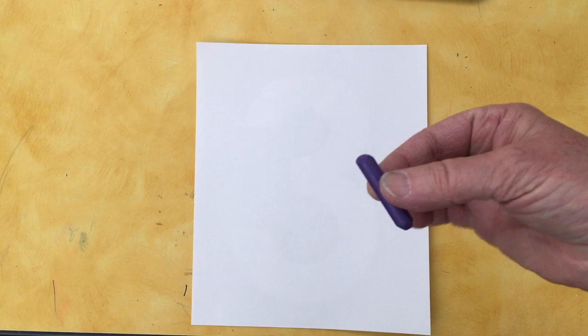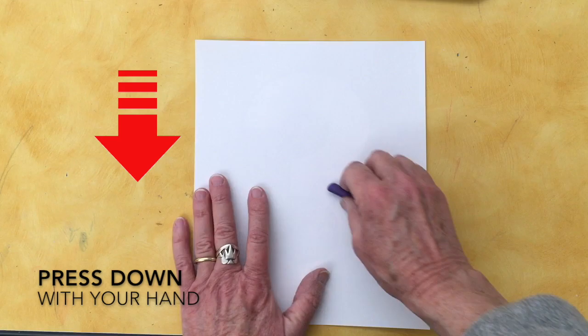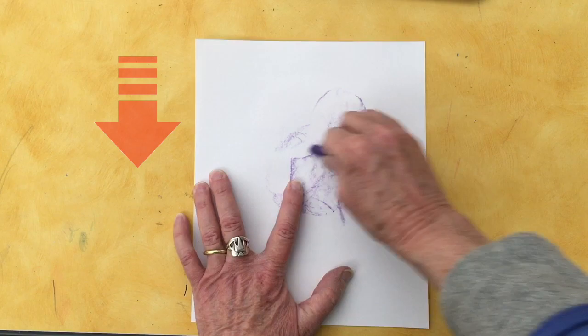We're going to take a piece of paper and we're going to lay it over top of the number. This is a two-handed project. One hand to hold the paper, one hand to hold the crayon. See how it's kind of sideways?